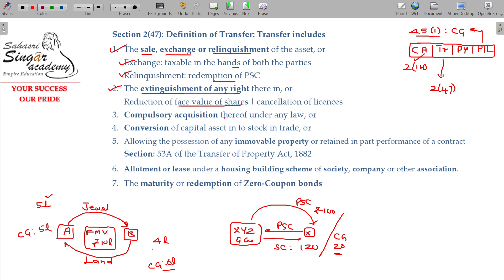Reduction of face value. That is also coming under extinguishment of any right. And cancellation of licenses also falls under this category.